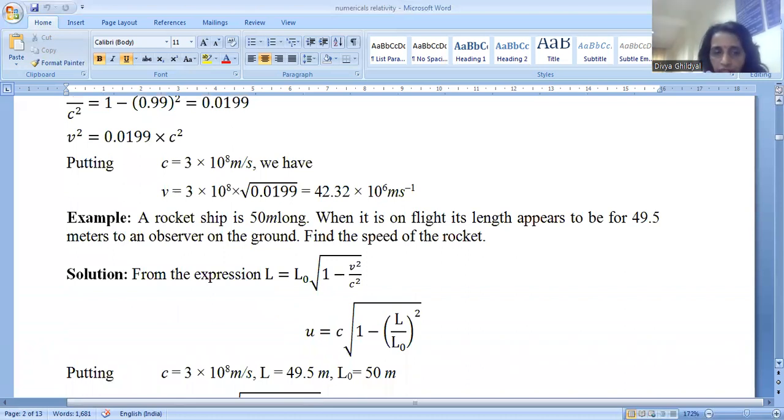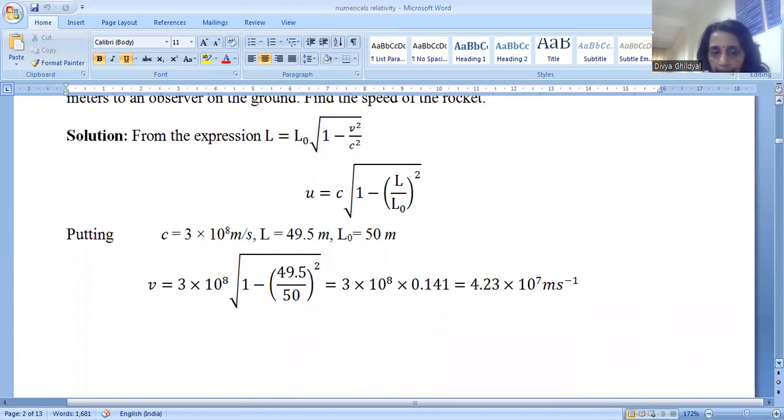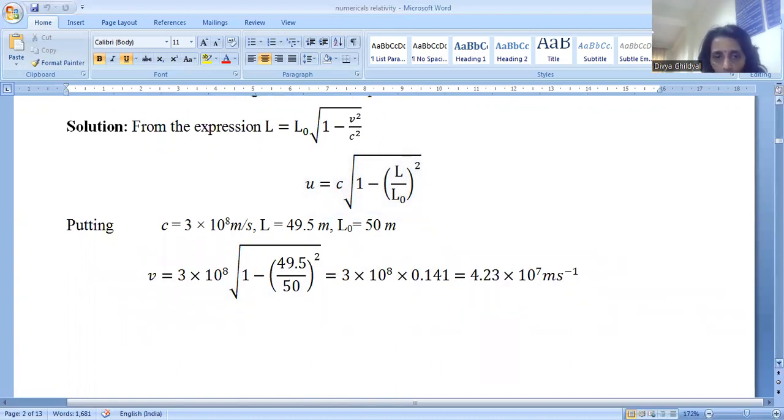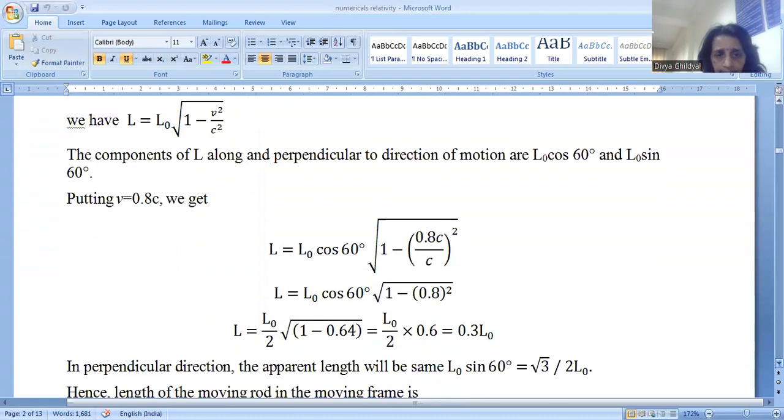A rocket ship is 50 meter long. When it is on its flight, its length appears to be 49.5 meter to an observer on the ground. Find the speed of the rocket. L is equal to L not into under root 1 minus v square by c square. Now, I have been given L, I have been given L not, c is speed of light, and I have to find out v in this numerical. So I will put my numerical values and I will get the value of v.